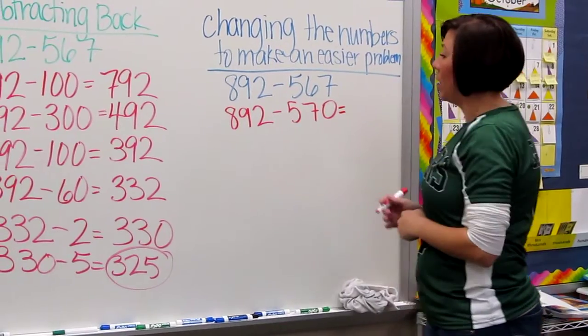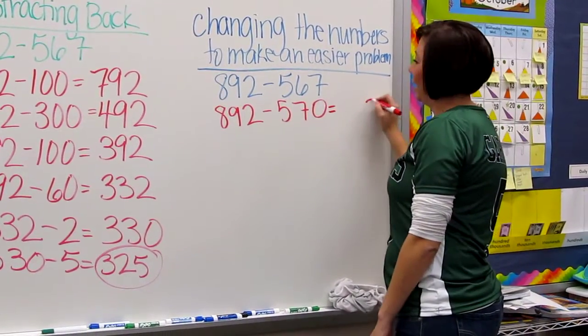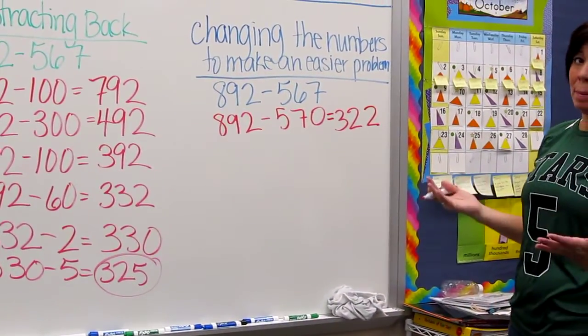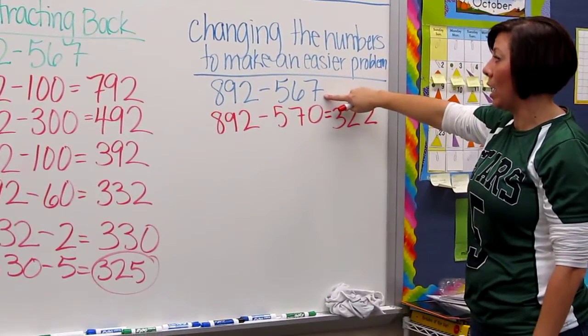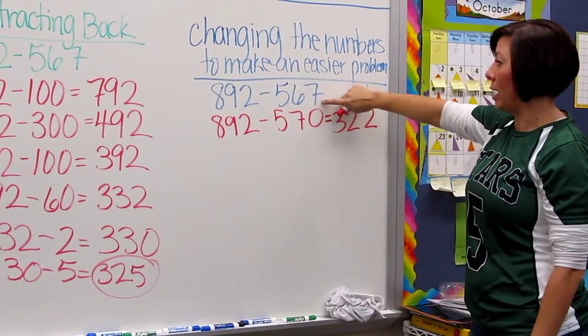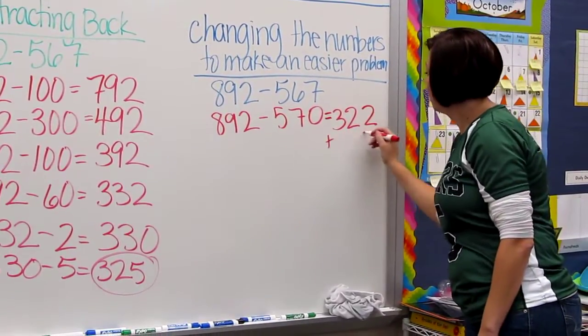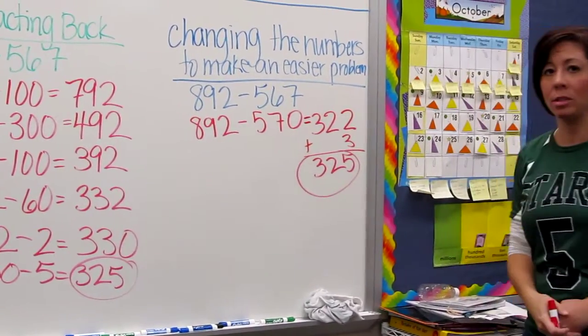892 minus 570 gives me 322. My problem is basically done, except for now I have to go back and think, I took away three too many between here. I took away three more than I had to. So I have to add those back in. And then I get my answer and I'm done.